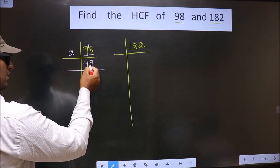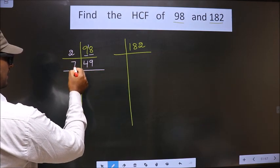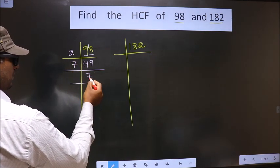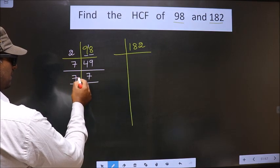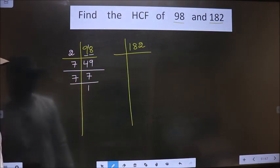Now, we got 49. 49 is nothing but 7 times 7 is 49. Now, 7 is a prime number, so we take 7 and 1.